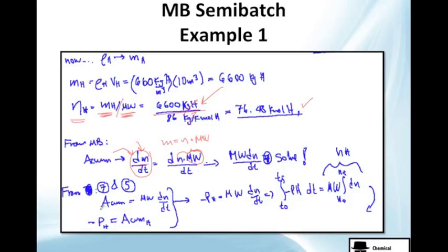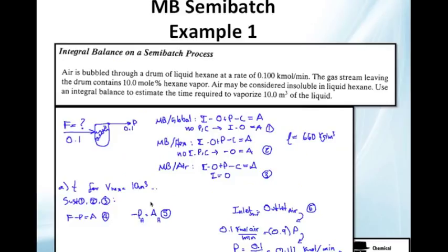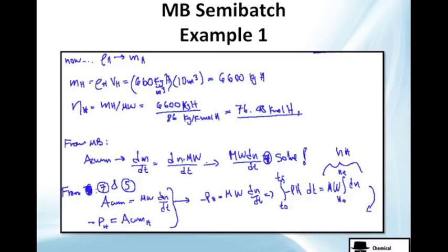From 7 and number 5, we know accumulation of, here it is, accumulation of hexane. It's equal to minus P hexane. So, accumulation will be equal to this. You have two equations, now solve.